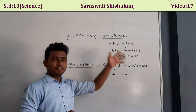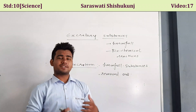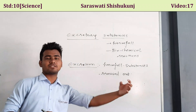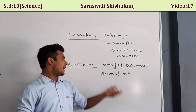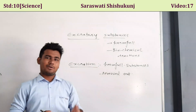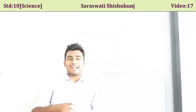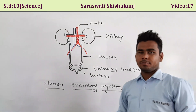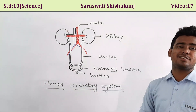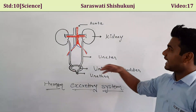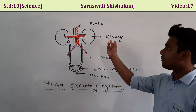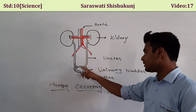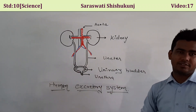Excretory substance means the harmful substance generated during biochemical reactions in the body, and the process of removing these excretory substances is called excretion. The human excretory system is made up of a pair of kidneys, a pair of ureters, a urinary bladder, and a urethra.